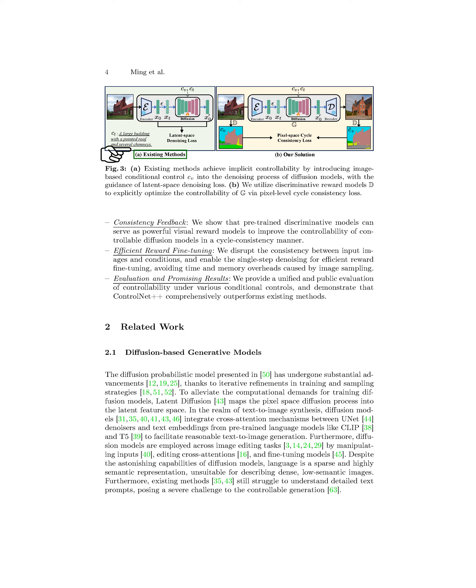We introduce additional modules like ControlNet and T2i Adapter to guide image generation in pre-trained text-to-image models for conditional control. Recent studies have used prompt engineering and cross-attention constraints to improve regulated generation. Some methods focus on multi-condition or multi-modal generation, but there is still a need for a clear approach to enhance controllability. Our ControlNet++ achieves this through cycle consistency, unlike existing methods that learn controllability implicitly through model denoising processes.